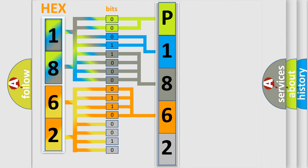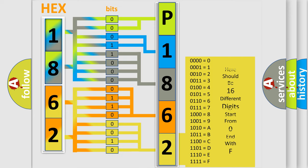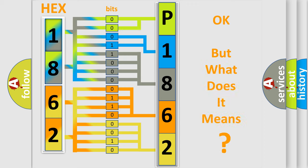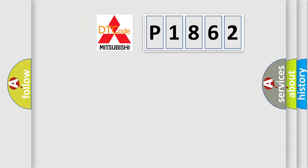A single byte conceals 256 possible combinations. We now know in what way the diagnostic tool translates the received information into a more comprehensible format. The number itself does not make sense to us if we cannot assign information about what it actually expresses. So, what does the Diagnostic Trouble Code P1862 interpret specifically for Mitsubishi car manufacturers?